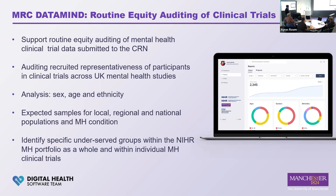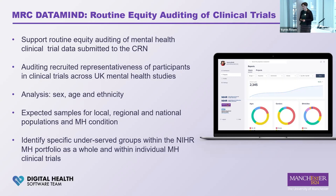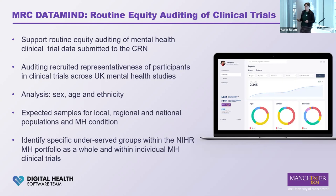That sounds really easy — just looking at sex, age, and ethnicity — but when we piloted it in Greater Manchester, loads of studies don't have sex, age, and ethnicity captured to begin with, which makes it quite difficult. Then thinking about denominators — what exactly are the expected samples for local, regional, and national populations by mental health condition — it's not quite as trivial as it sounds. The overall goal is to identify specific underserved groups within the NIHR portfolio as a whole and within individual studies, so we can target recruitment at different touch points or conduct routine auditing across the portfolio.